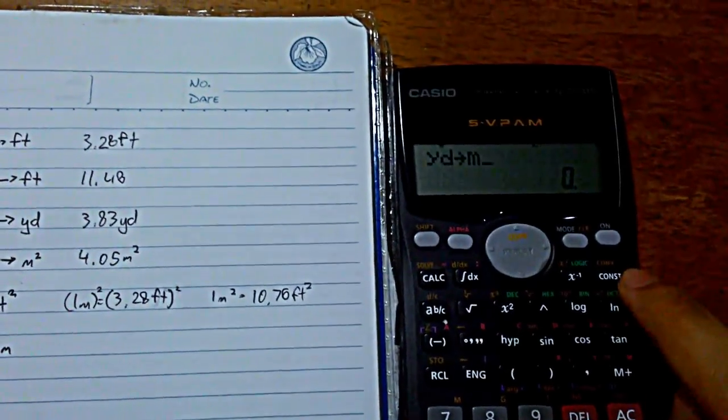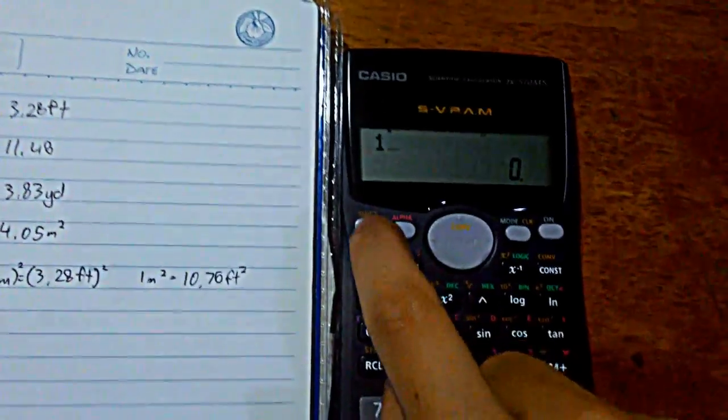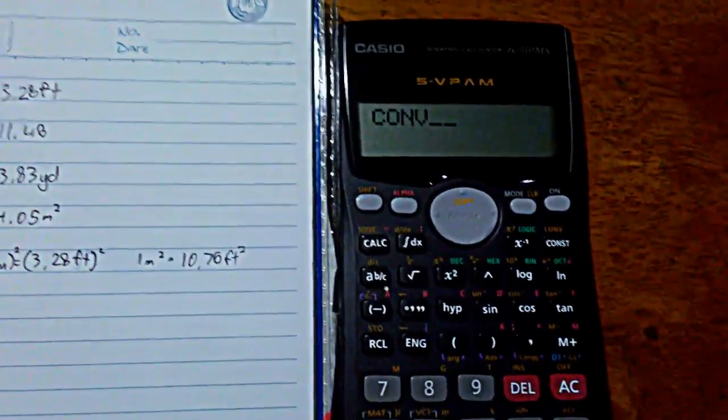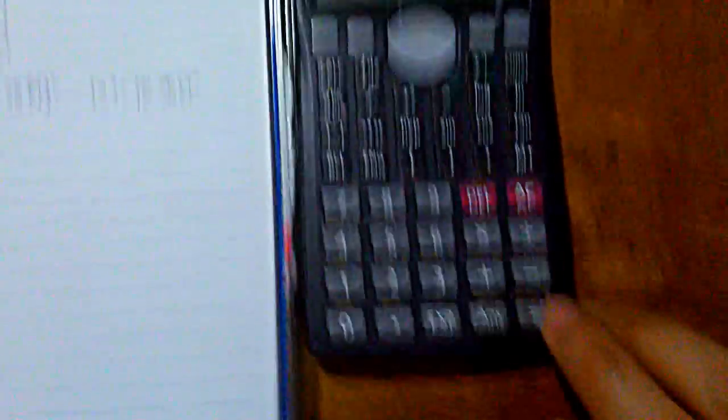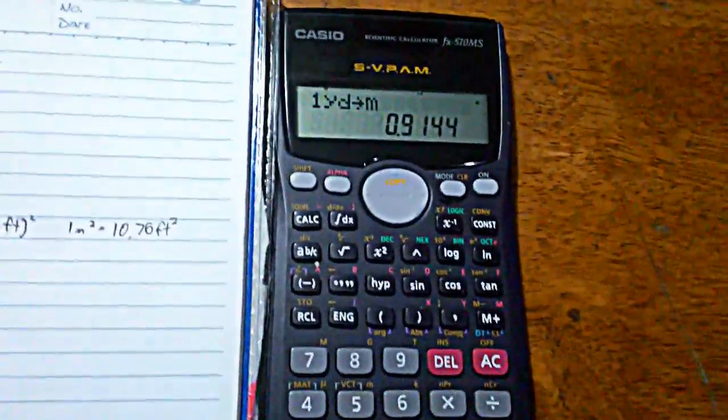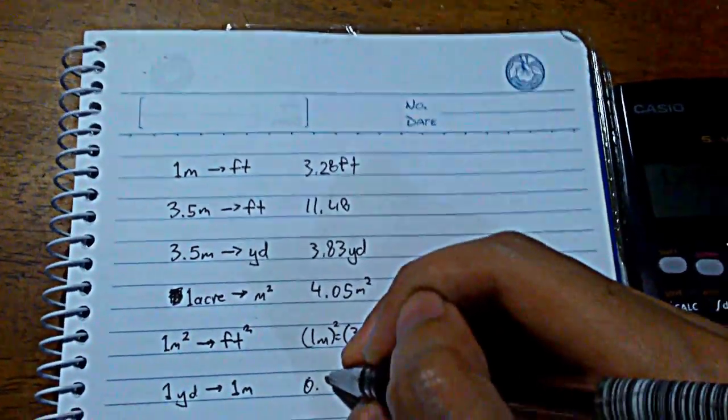Okay. So we know that the code that we need is 0, 5. So we input 1, 1 yard. Again, activate the convert function. Input code 0, 5. 1 yard is to how many meters? Press equals 0.9144. So that is 0.91 meters.